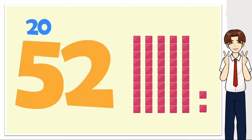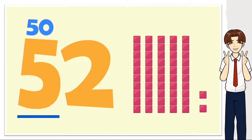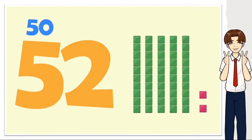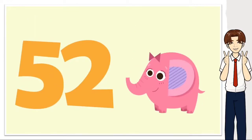Ten, twenty, thirty, forty, fifty. The value of the five is fifty. Remember to look at the place the digit is in before you decide the value of that number.